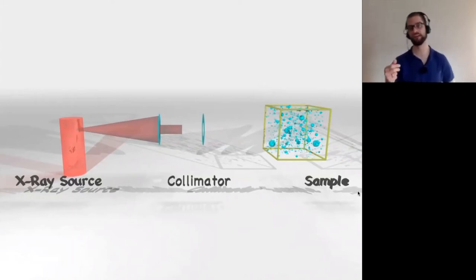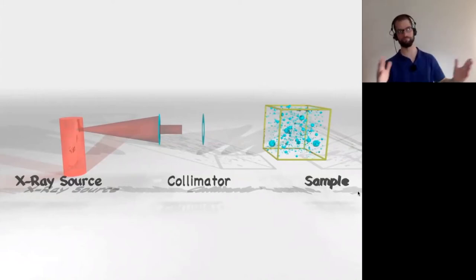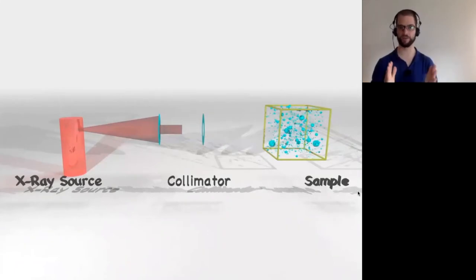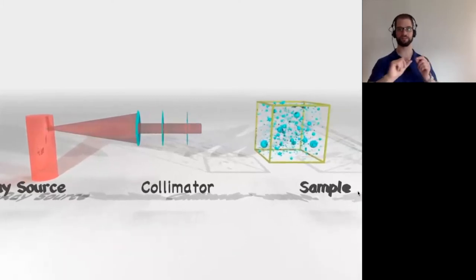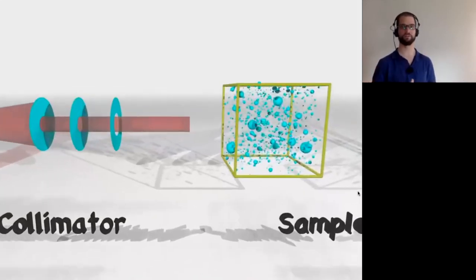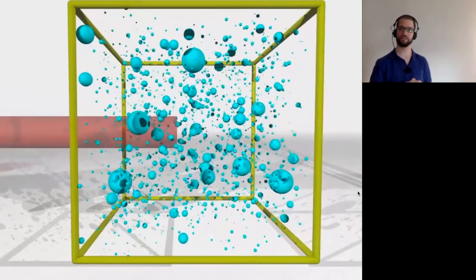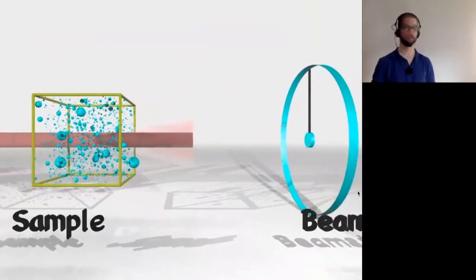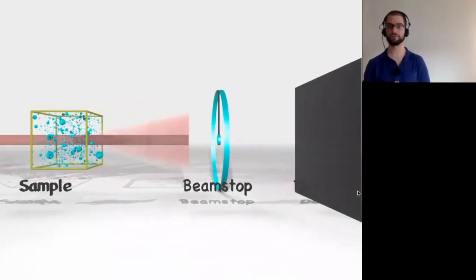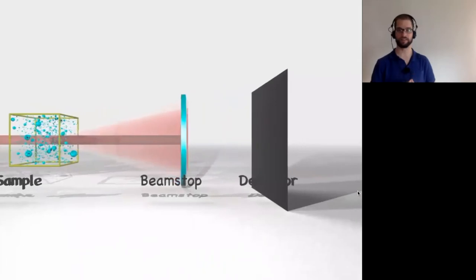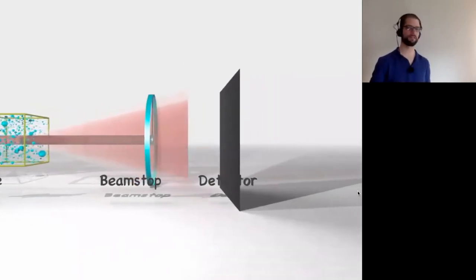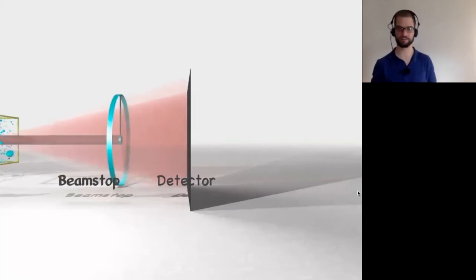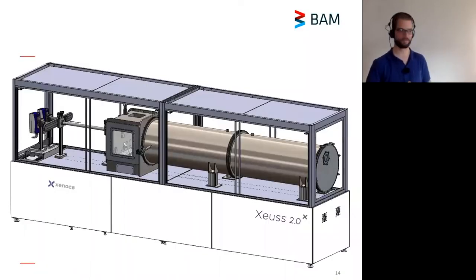Then you cut down these x-rays with a collimator so that you get a nice shaped beam out — in our case about half a millimeter across. Electron density differences in your sample will cause a small fraction of this radiation to be scattered and diffracted. We stop the direct beam with a beam stop to improve our signal and collect the scattered radiation onto our detector. It seems simple in theory, and it is actually also simple in practice.